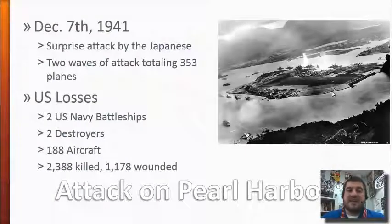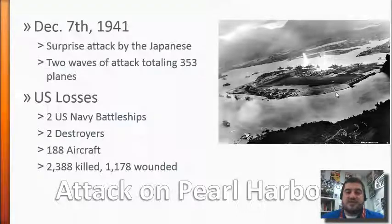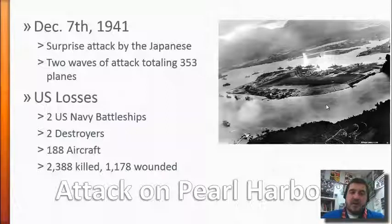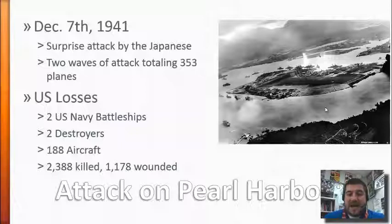On December 7th, 1941 — and that date's important — there is a surprise attack on Sunday morning by the Japanese. Two waves of attack totaling 353 planes bomb the ships at Pearl Harbor. US losses include 2,388 people killed. It was the biggest attack on the United States until 9/11. We lost two battleships, two destroyers, and 188 aircraft, but it could have been a lot worse.